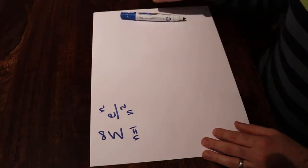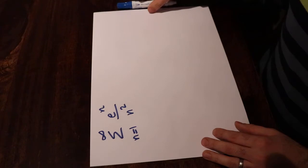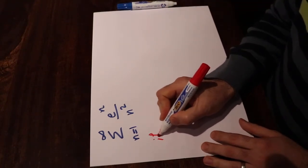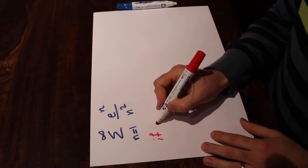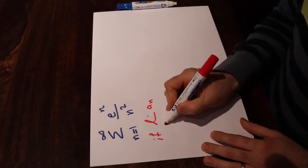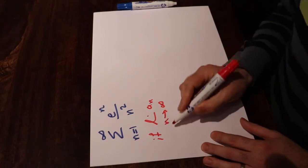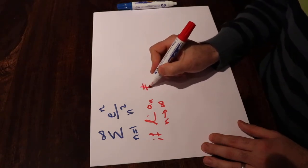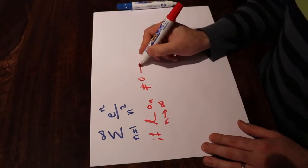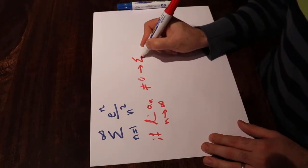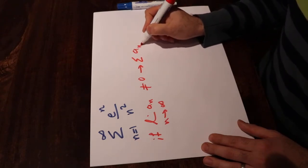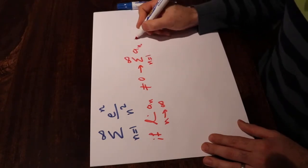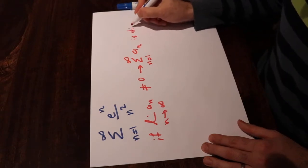There is a test saying that if the limit of aₙ when n goes to infinity does not exist, or if it is not equal to zero, you can conclude that the series sigma aₙ when n changes from 1 to infinity is divergent.